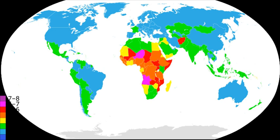A number of ancient writers have reflected on the issue of population. At about 300 BC, the Indian political philosopher Chanakya (c. 350–283 BC) considered population a source of political, economic, and military strength. Though a given region can house too many or too few people, he considered the latter possibility to be the greater evil.